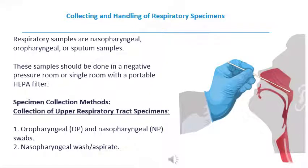Collecting and handling of respiratory specimens: respiratory samples such as nasopharyngeal, oropharyngeal, or sputum samples should be collected in a negative pressure room or a single room with a portable HEPA filter if a negative pressure room is not available. There are two methods for the collection of upper respiratory tract specimens — oropharyngeal and nasopharyngeal swabs, and nasopharyngeal wash or aspirate — as well as other methods for the collection of lower respiratory tract specimens.